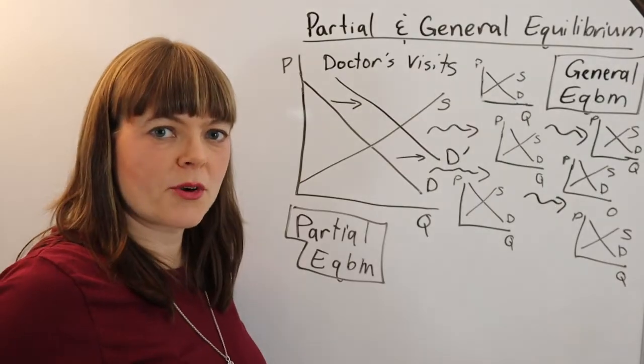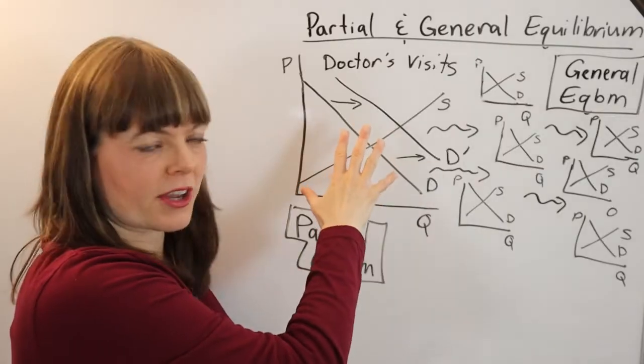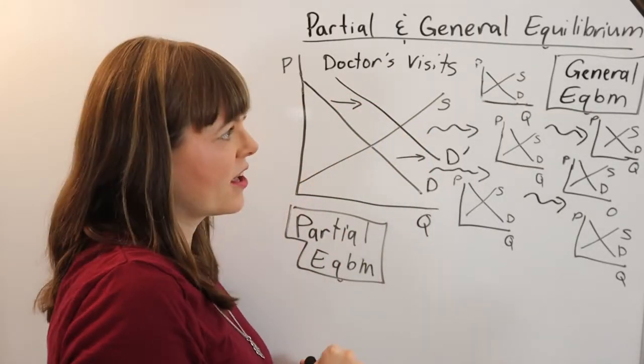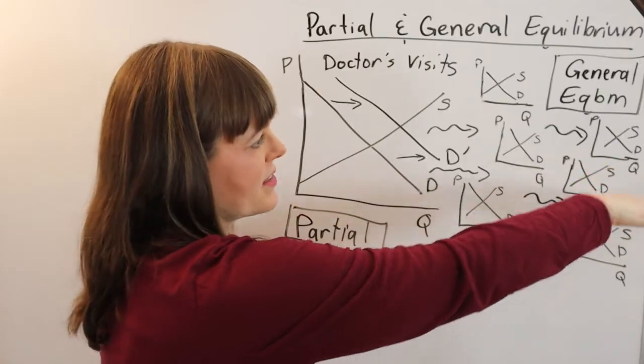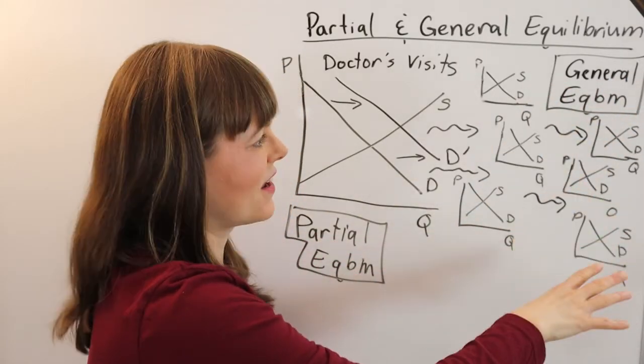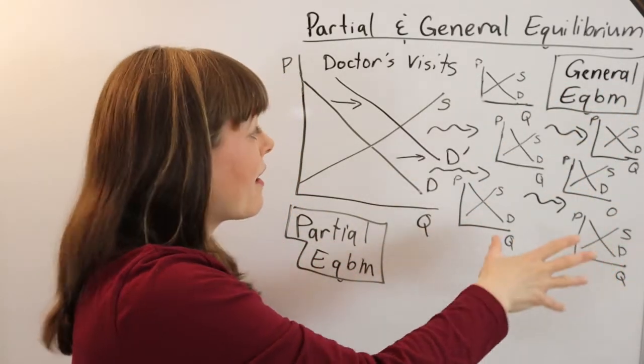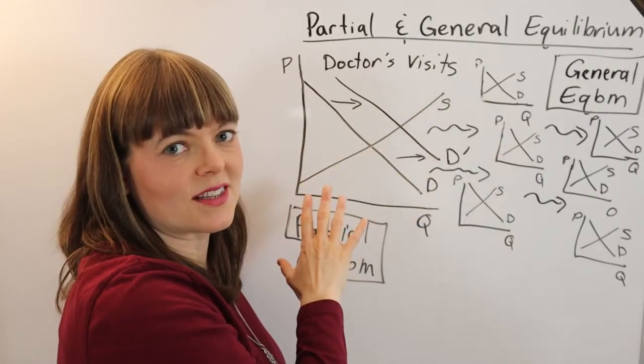Partial equilibrium happens in one particular market after a specific shift has occurred. General equilibrium is the final, all is said and done, situation with every market that might be related to these changes.